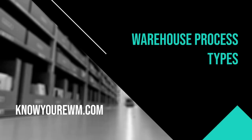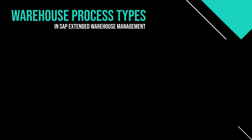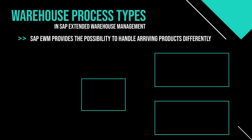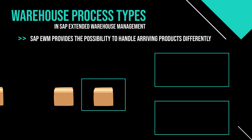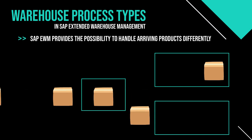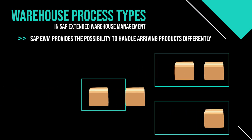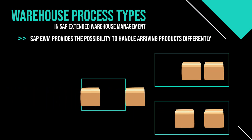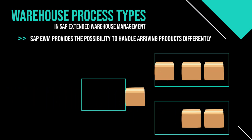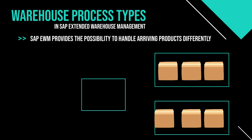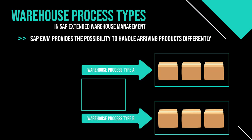Warehouse process types. When different products arrive at the warehouse, they are handled in a different way — SAP EWM provides the possibility to handle them differently. Some products may go straight to put away to be stored in a storage bin, while others need to be deconsolidated or counted first. In SAP EWM, this can be set up with separate warehouse process types.